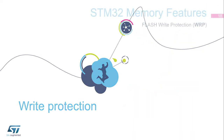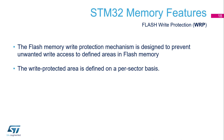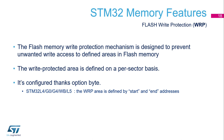Flash write protection, also called WRP, is a mechanism designed to prevent unwanted write access to a defined area in flash memory. It's defined on a per-sector basis and configures an option byte. For the STM32 L4, G0, G4, WB, and L5, the WRP area is defined by a start and an end address. For all others, an option bit per sector is used — one option bit per sector.